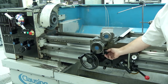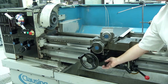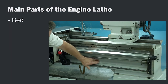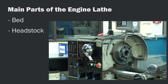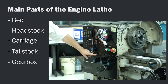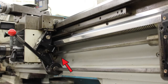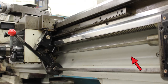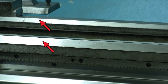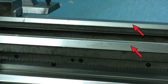Let's begin with the main components of the engine lathe. The five main parts are the bed, the headstock, the carriage, the tailstock, and the gearbox. The bed is the large casting that supports and aligns the components — it's the backbone of the lathe. The bedways, or ways, are the precision machine surfaces that sit on top of the bed.